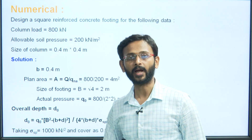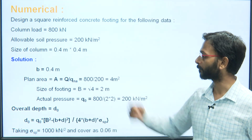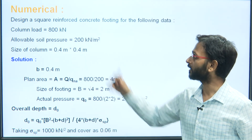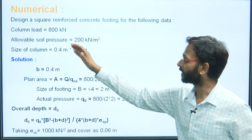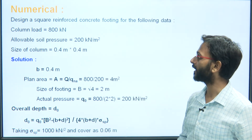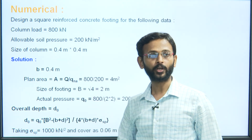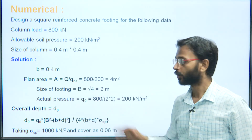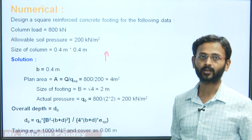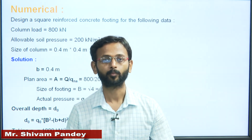Let us see the numerical problem. Design a square reinforced concrete footing for the following data: column load = 800 kN, allowable soil pressure = 200 kN/m², size of column = 0.4 m × 0.4 m. Try to solve it at home. We will be discussing it in the next class. Thank you for today.